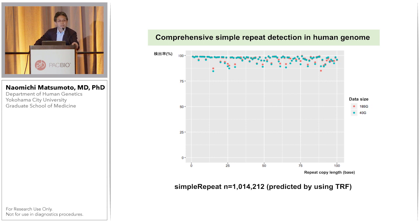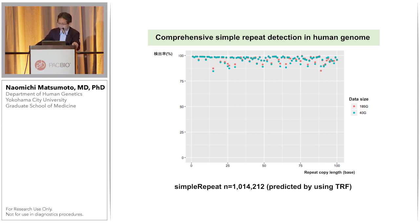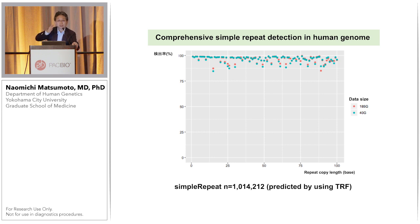Tandem Genotype can pick up most repetitive expanded regions even with relatively shallow coverage sequencing. The green bar represents 40 gigabytes coverage and the red one is 185 gigabytes coverage. Regardless of data amount, we can mostly pick up the repetitive expanded regions using this method.